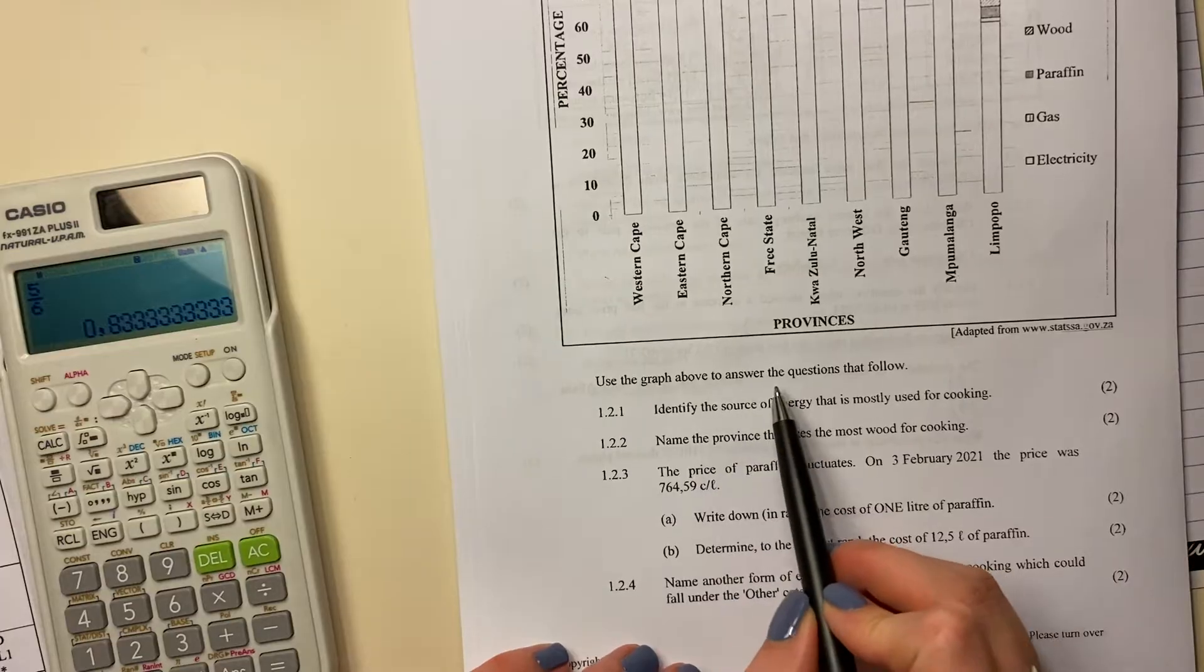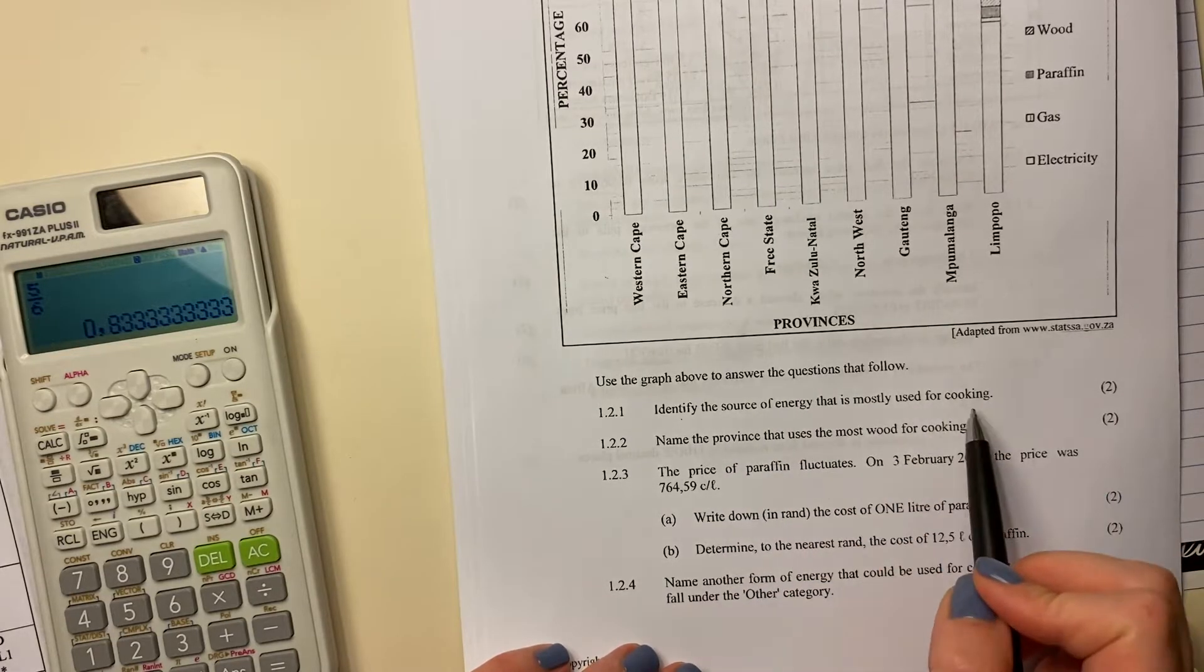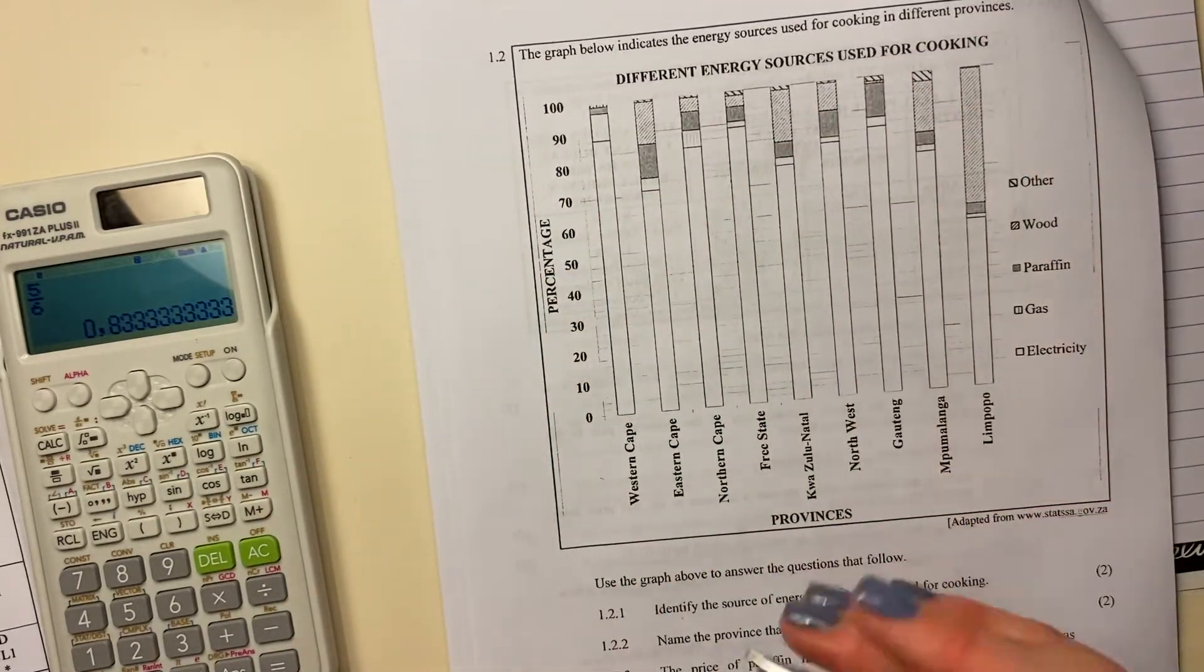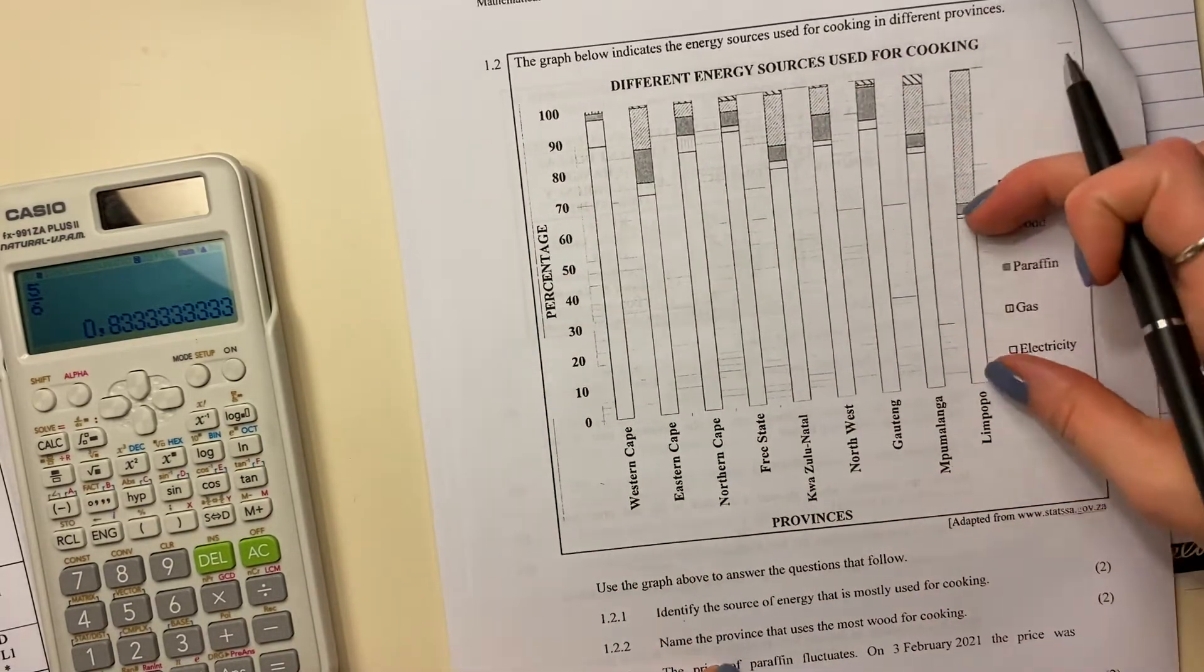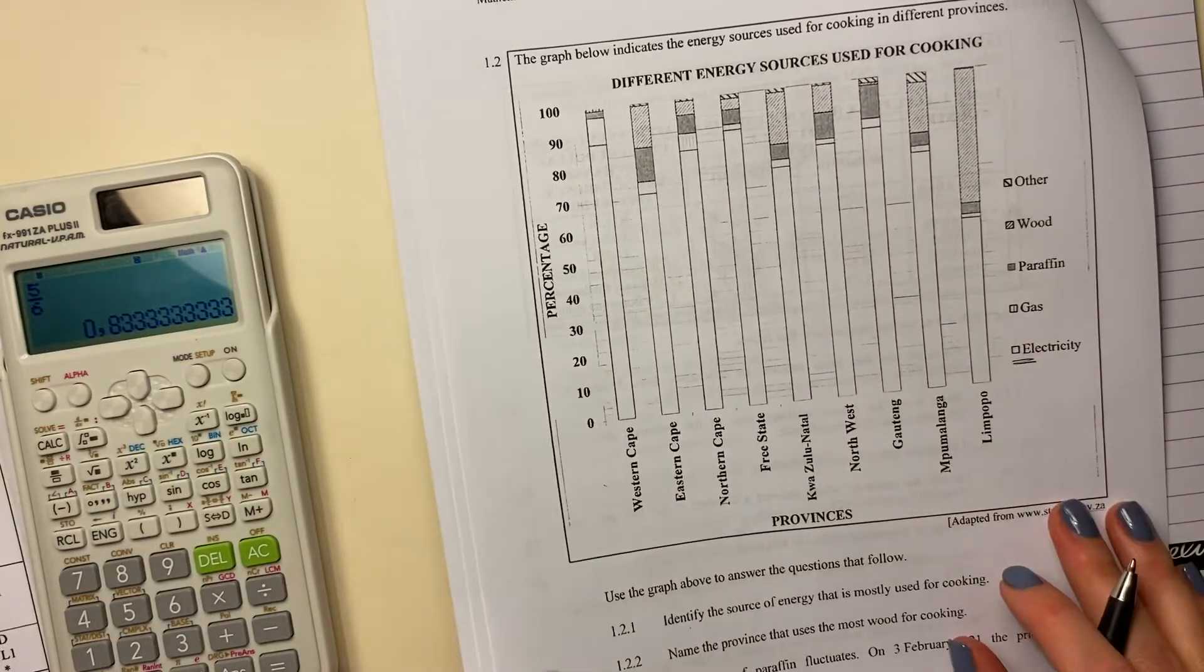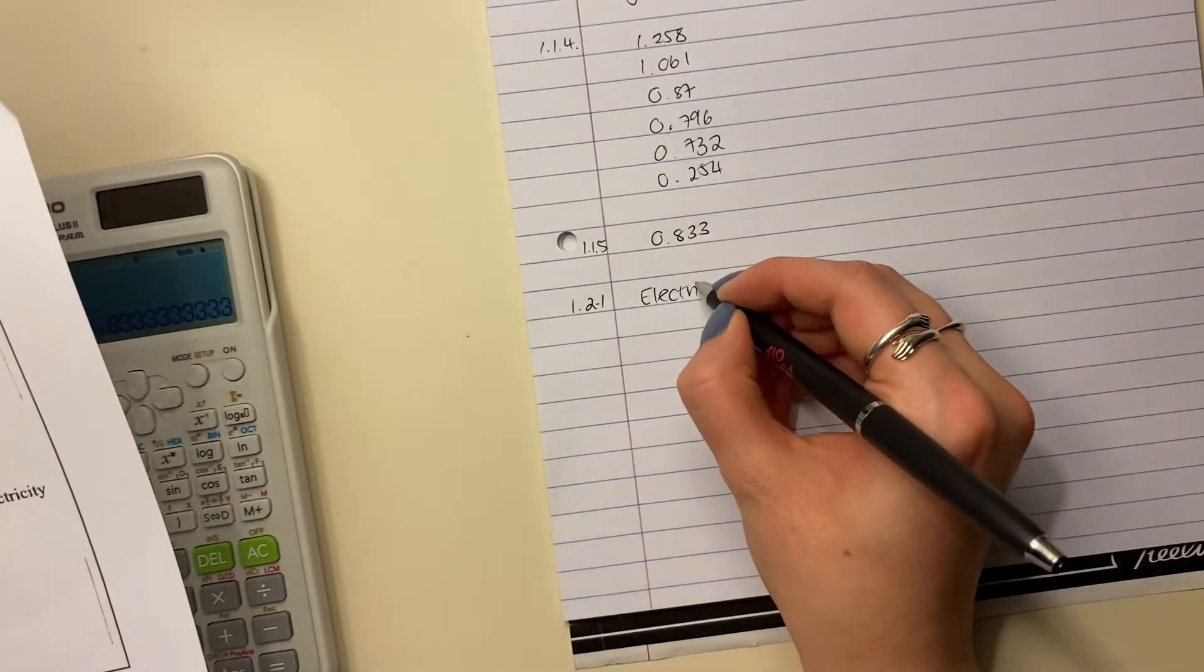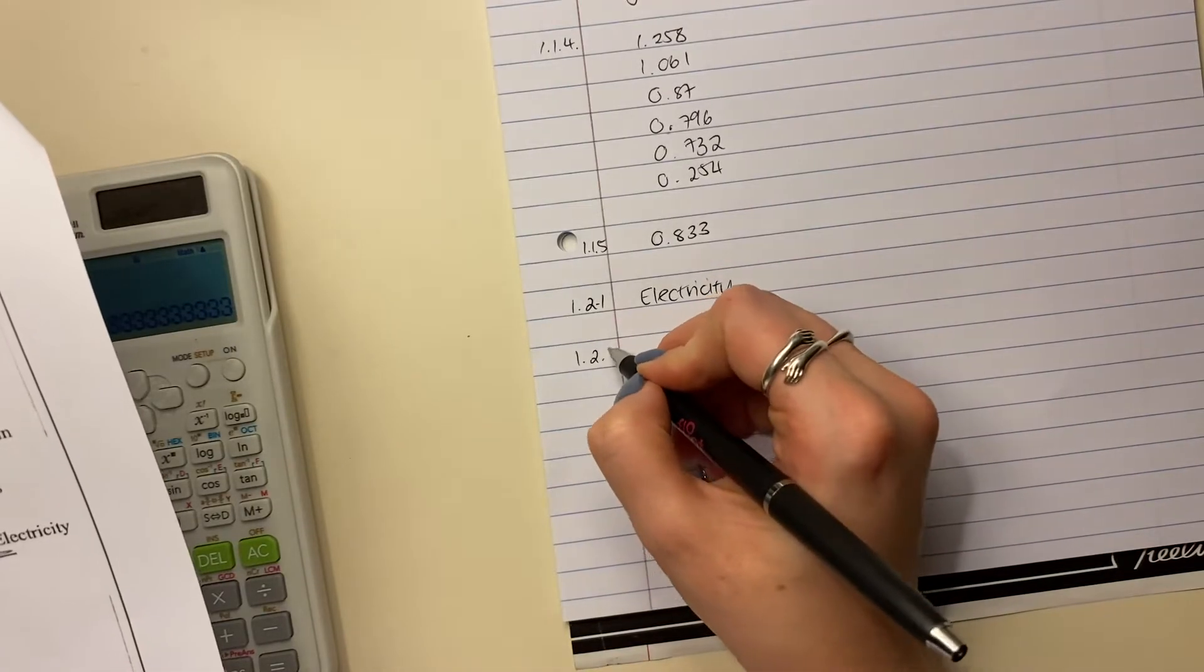Use the graph above to answer the questions that follow. Identify the source of energy that is mostly used for cooking. Okay, so in all of these, which one looks like it's mostly used? It's kind of this white little block at the bottom, right, which we can see correlates to electricity. So you just say here, electricity. So it's important that you're able to read graphs.